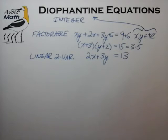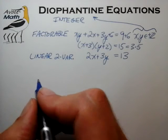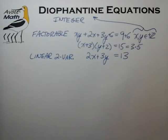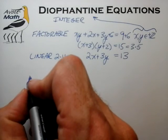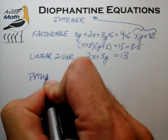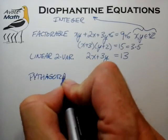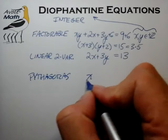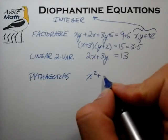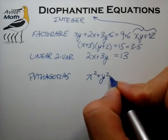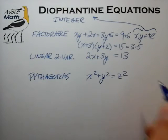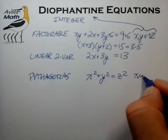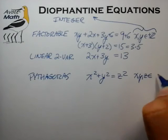The third category of equation I describe as the Pythagoras type. It basically stems from the Pythagorean relationship x² + y² = z², where we're trying to solve for x, y, and z in positive integers.